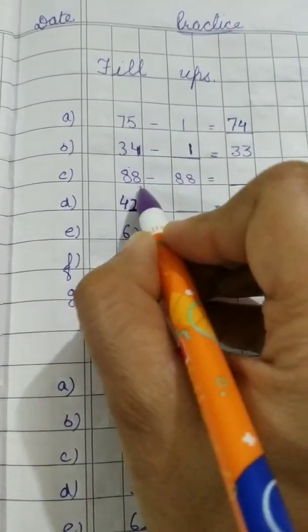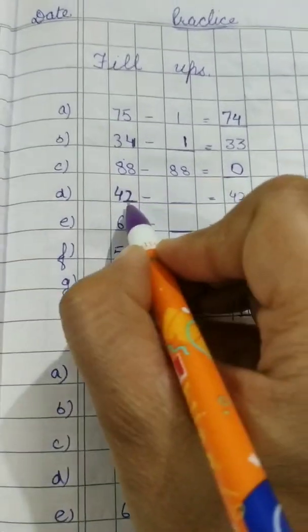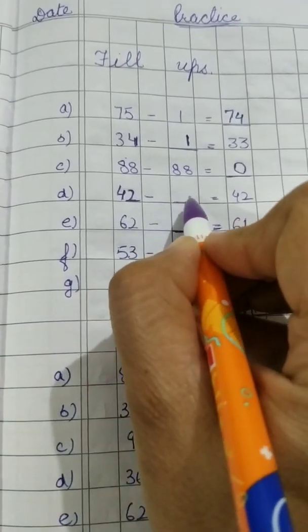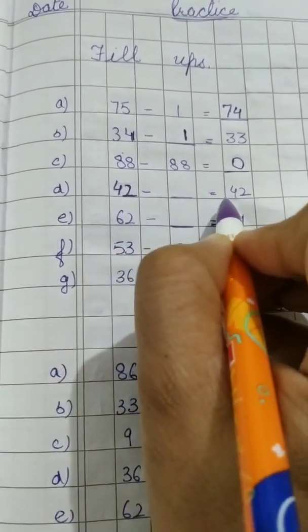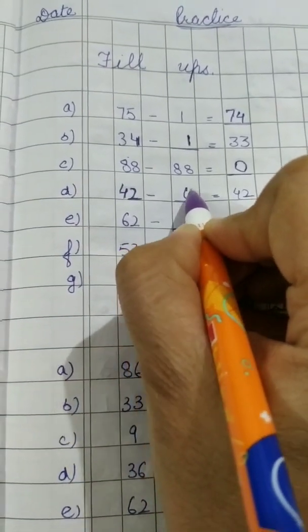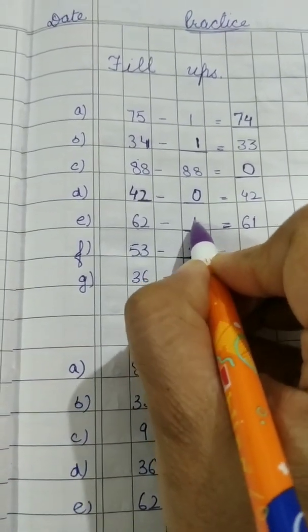88 minus 88. Same numbers are being subtracted, so answer will be 0. Now 42 minus dash is equal to 42. What can we subtract from this number to get the same number? We can subtract 0. Now 62 minus what is equal to 61? This also 1.